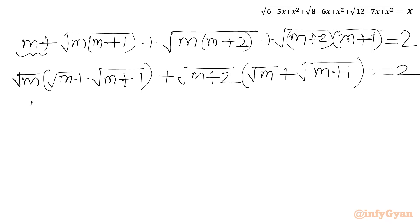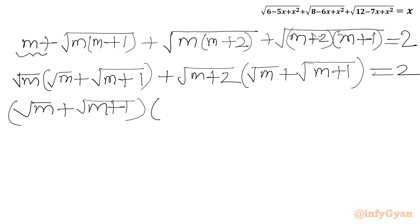Now we take (√m + √(m+1)) common from the entire left-hand side, leaving the bracket (√m + √(m+2)) as the remaining factor, and the RHS is 2.